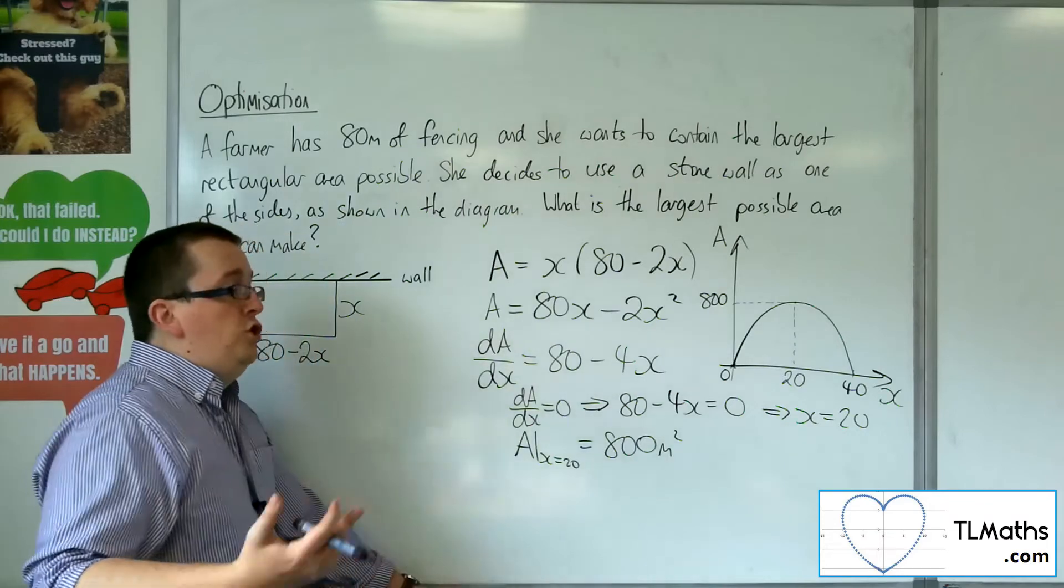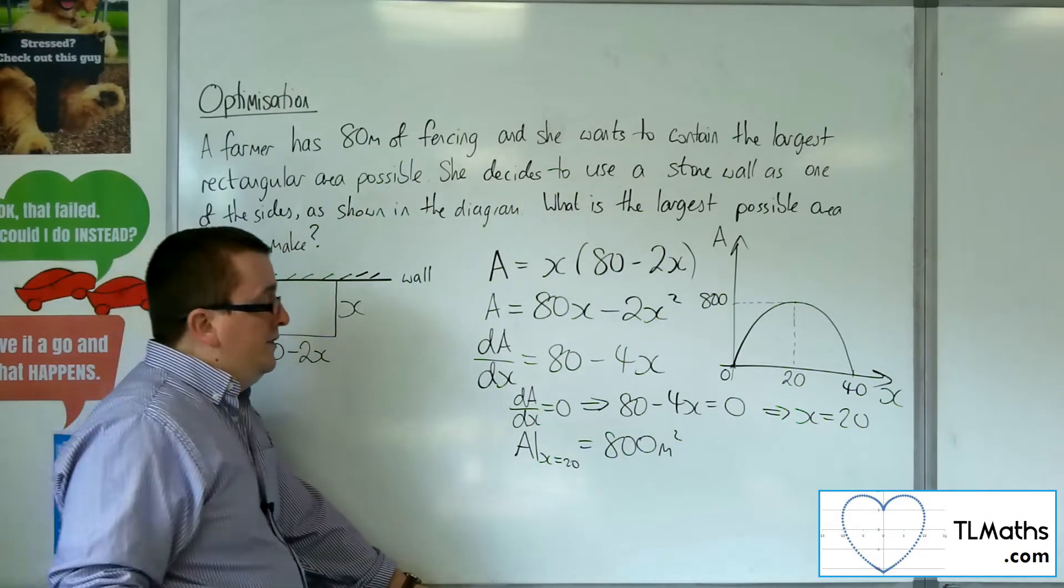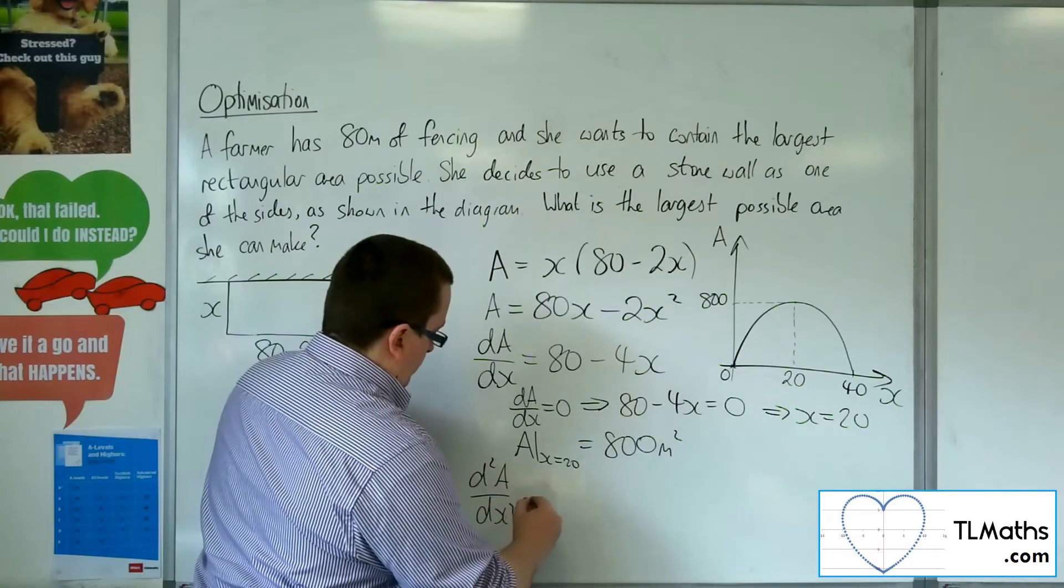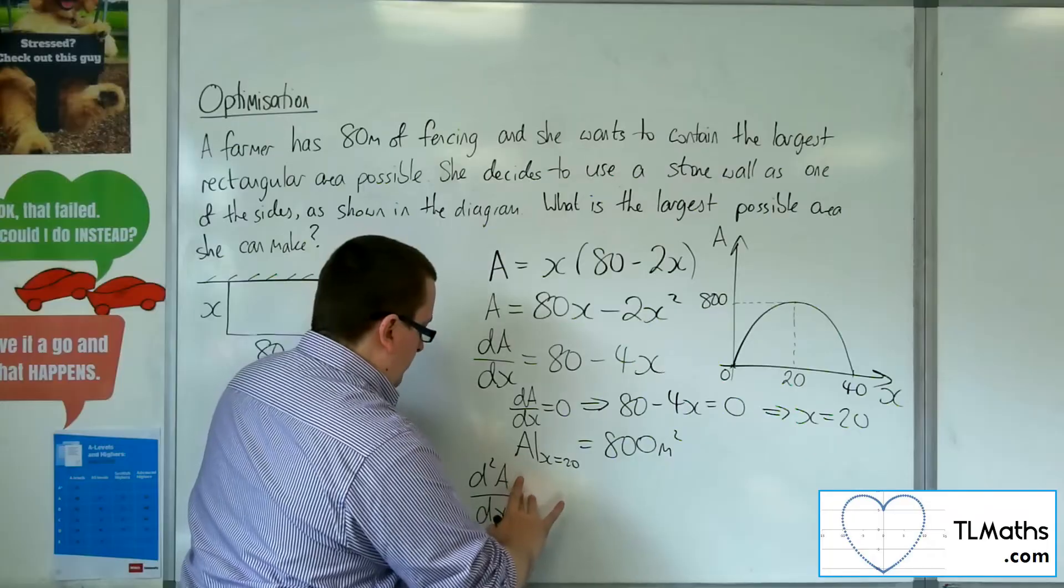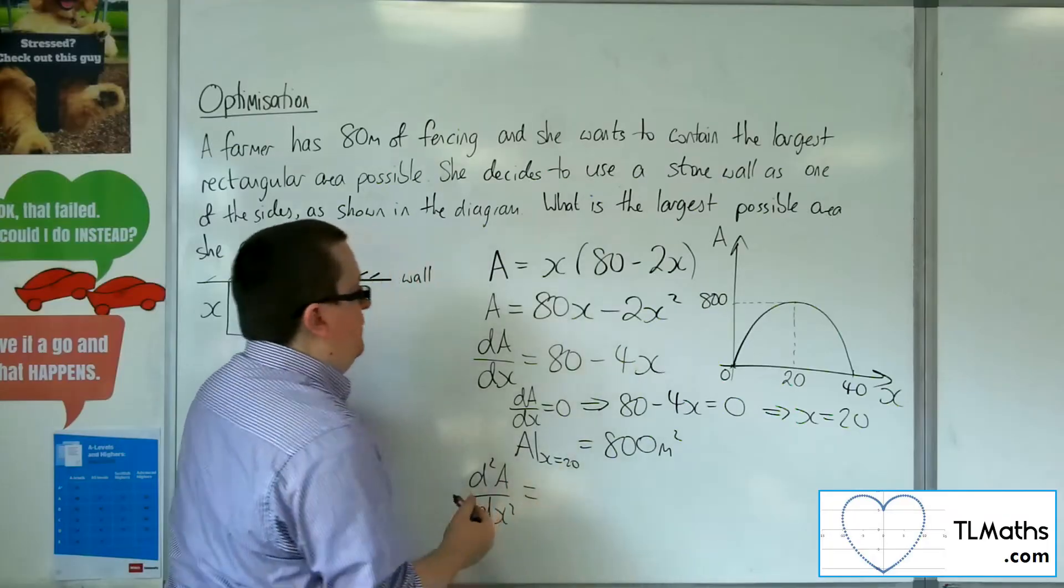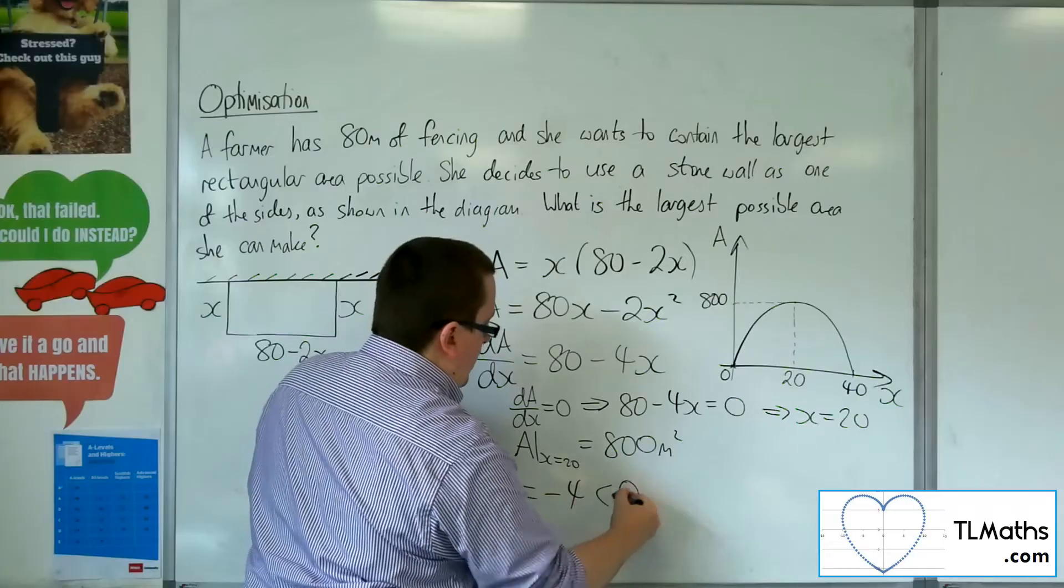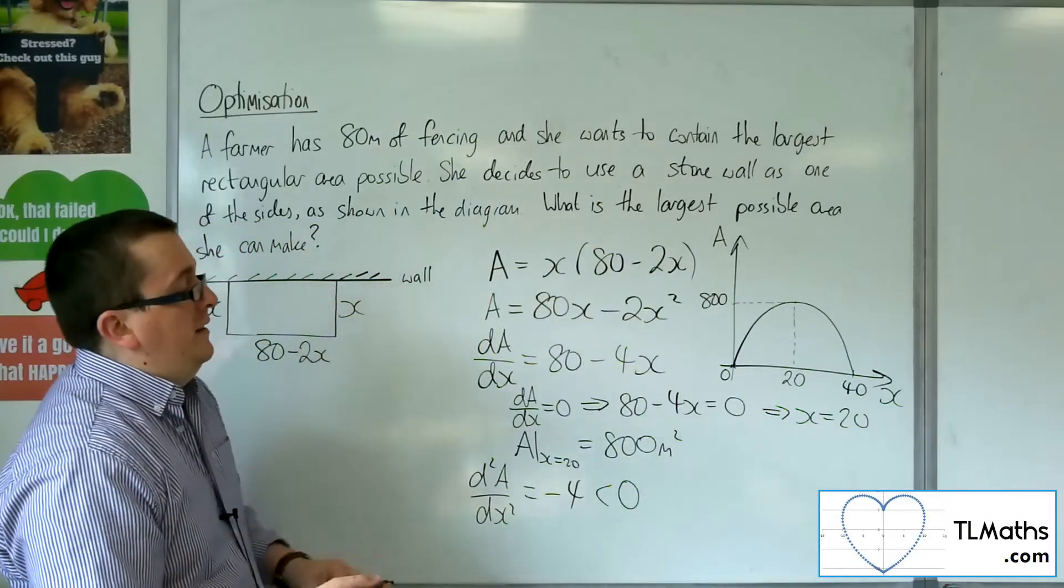You could also check that this is going to be a maximum point by finding the second derivative. Second derivative, differentiating that, we get minus 4, which is clearly negative.